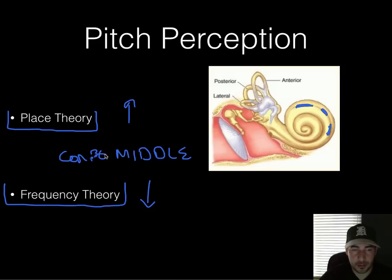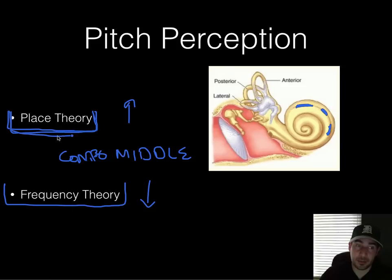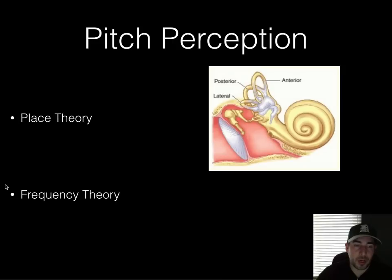Place theory is actually associated with Helmholtz — the same guy from the last unit on color vision, Young-Helmholtz. Helmholtz was really all about sensation, and he's the one who came up with place theory as applied to the ear.